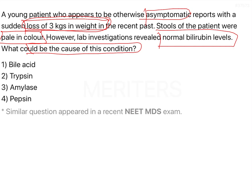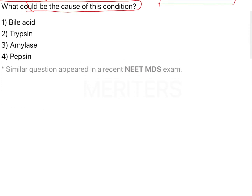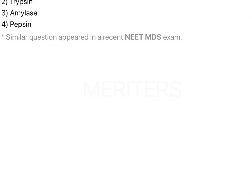When reading this question, the first thing that comes to mind is the metabolism of bilirubin — basically how bilirubin is formed. There will be destruction of RBCs, forming hemoglobin and releasing the heme protein, and this heme protein is responsible for the formation of bilirubin.